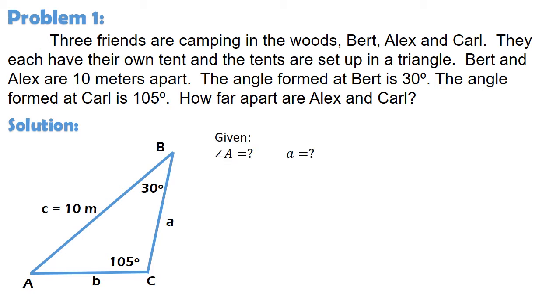To summarize our given, we have angle A and side a na kung saan parehas na wala tayong information. We have angle B which is equal to 30 degrees at side b naman na wala tayong information. And we have angle C which is 105 degrees at side c which is equal to 10 meters. Kung mapapansin ninyo, meron tayong isang pares ng angle at side kaya pwede natin i-apply ang law of sines.